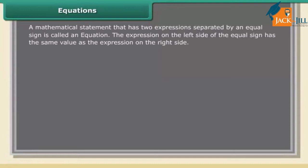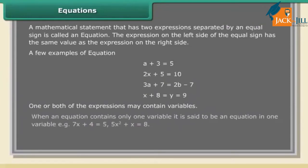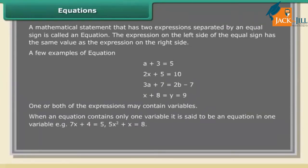Equations: a mathematical statement that has two expressions separated by an equal sign is called an equation. The expression on the left side of the equal sign has the same value as the expression on the right side. One or both of the expressions may contain variables.